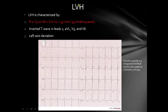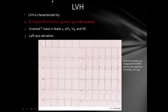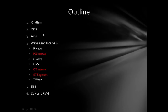For left ventricular hypertrophy, the R wave in V5 or V6 plus the S wave in V1 should be more than 35 small squares combined. You can also commonly see inverted T waves in leads 1, AVL, V5, and V6 — all of which go with left ventricular hypertrophy — along with left axis deviation, though this is not specific for left ventricular hypertrophy.